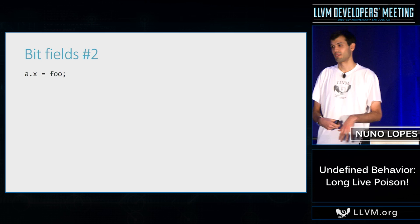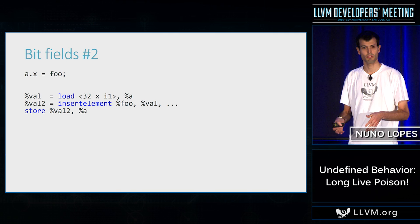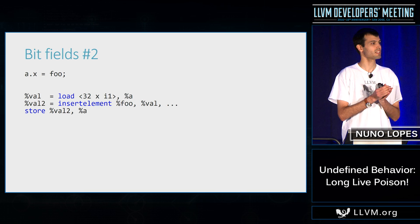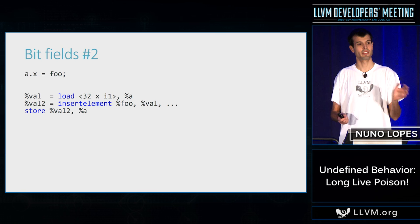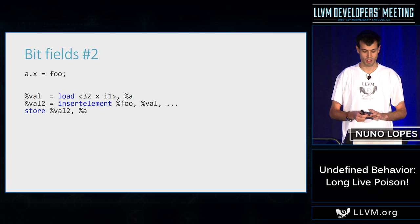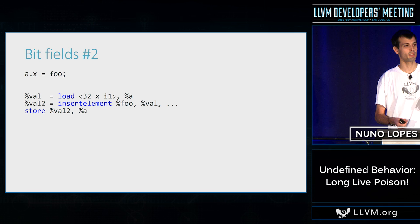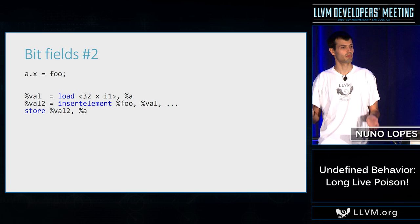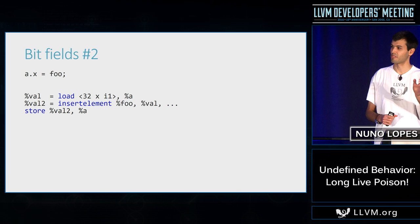An alternative approach that seems better is to use loads of vectors — loading a set of bits as 32 I1s. Since the semantics are that each element of the vector doesn't taint the others, we can just load these bits, do insert element or shuffles, and store back the vector. With this, you don't need any freeze. You also get perfect store forwarding. The caveat is that our code gen today is not great for these kinds of loads and stores of vectors of I1s, so we would need to fix that. Going forward, this seems a better way of lowering bit fields.